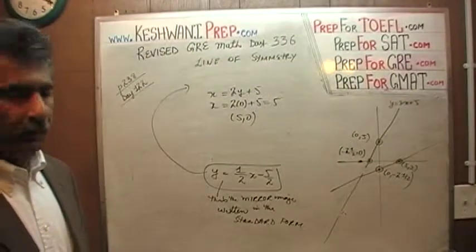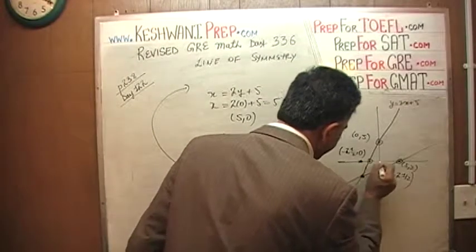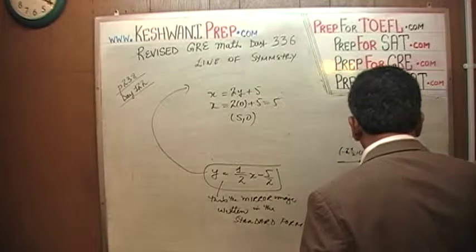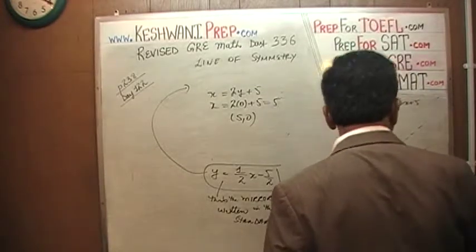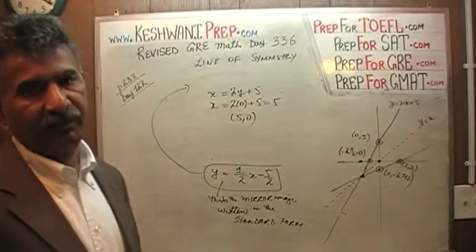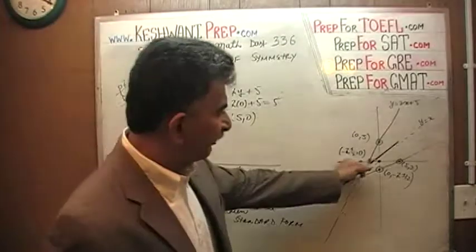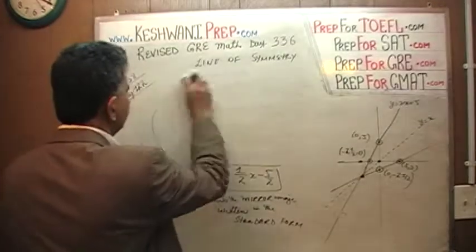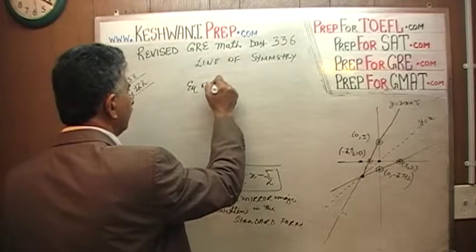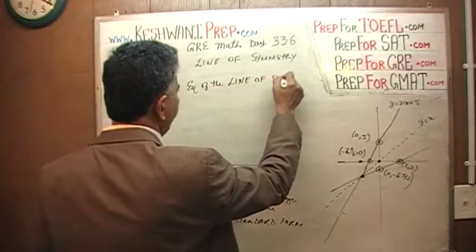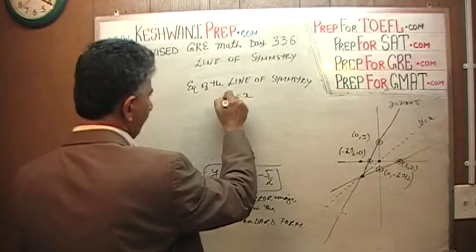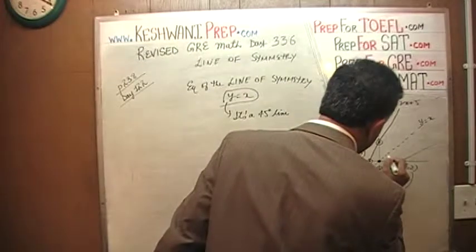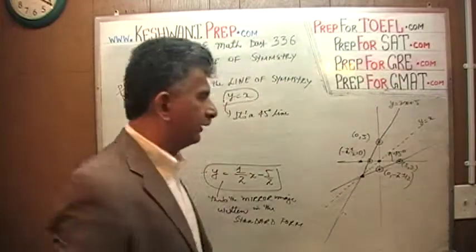The point where the two lines intersect and the origin — if we join these two points, what we get is what is known as the line of symmetry. The line of symmetry is your mirror, and this is the reflection along it. The equation of the line of symmetry is simply y = x, or equivalently x = y. It's a 45-degree line.